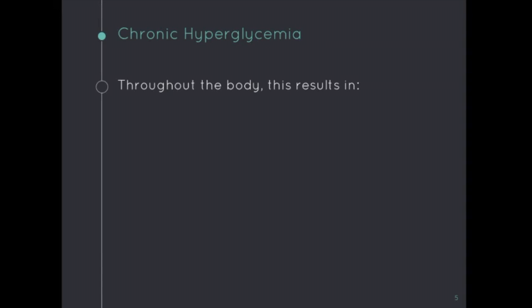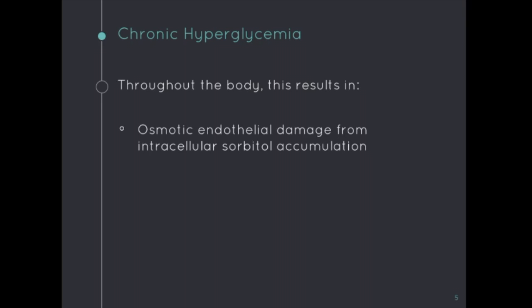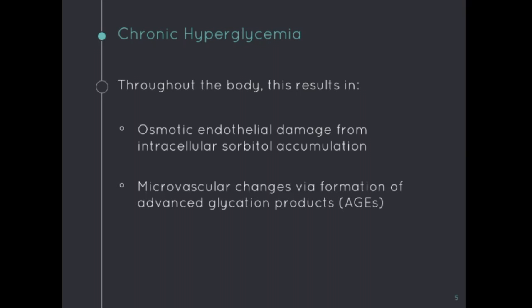Chronic hyperglycemia causes cell damage to various organs through several mechanisms. Those that are especially pertinent to the eye are osmotic endothelial damage from intracellular sorbitol accumulation, microvascular changes via formation of advanced glycation products or AGEs, and increased production of and susceptibility to reactive oxygen species.